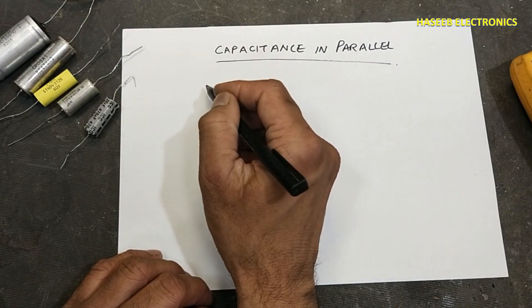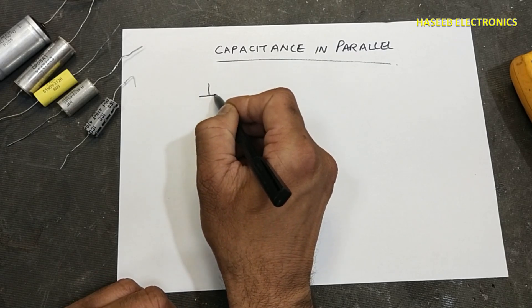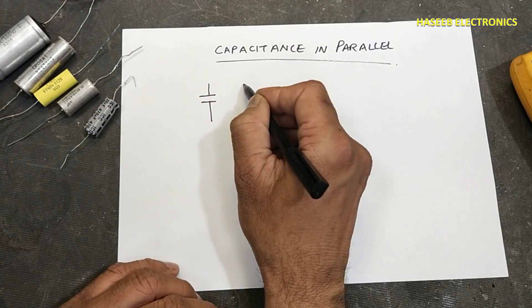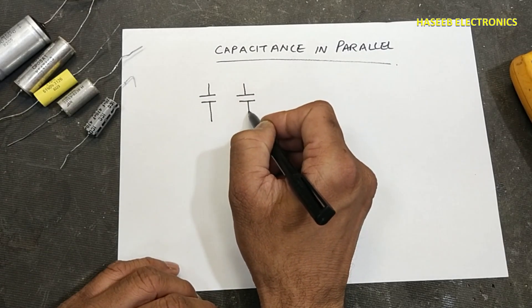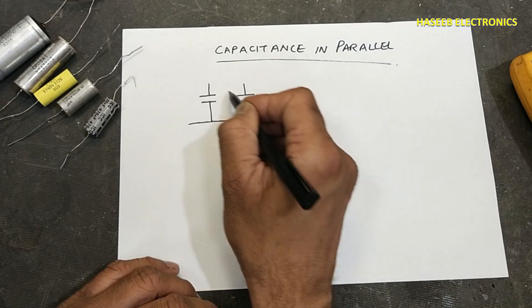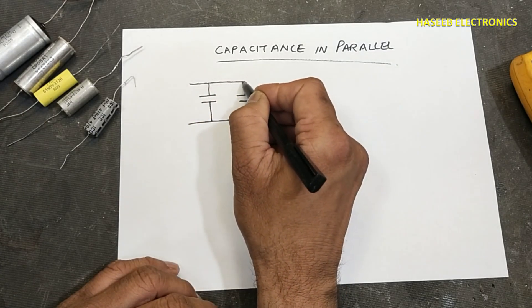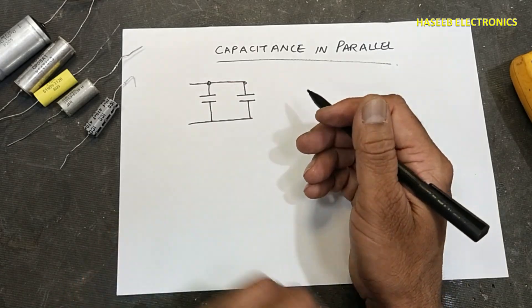We have these five capacitors. If you have two or more than two capacitors, they are connected in this way. It is called parallel connection.